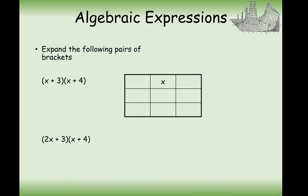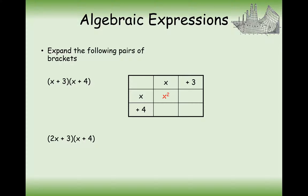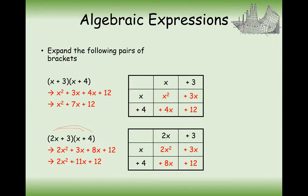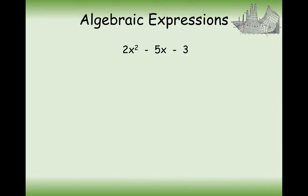Now we'll look at what we need to do when we have a 2x squared at the front. Just remember from our box method that when we multiply out our brackets, because there's a 2 here, that 4 is going to get doubled. So in this case here, it's not just going to be as easy as thinking two numbers times together to make 12 — that's 3 and 4 — and add together to make 7. The answer will actually be 11, because the 4 has been doubled since it's expanding with a 2x.